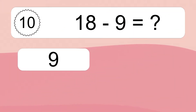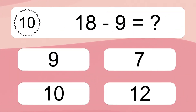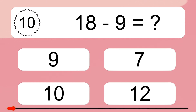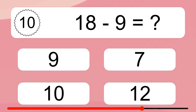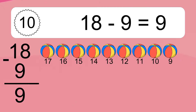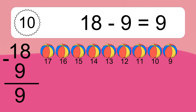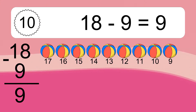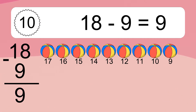18 minus 9 equals what? 18 minus 9 equals 9. Let's count it: 17, 16, 15, 14, 13, 12, 11, 10, 9.